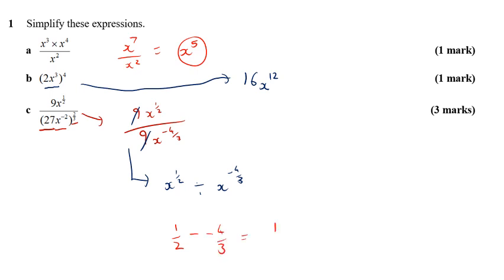That calculation is then the same as 1 half plus 4 thirds. I'm not going to go through here how you would add fractions. But when you add those two fractions together, we should get an answer of 11 over 6. And so the answer to part C is x to the power of 11 sixths.